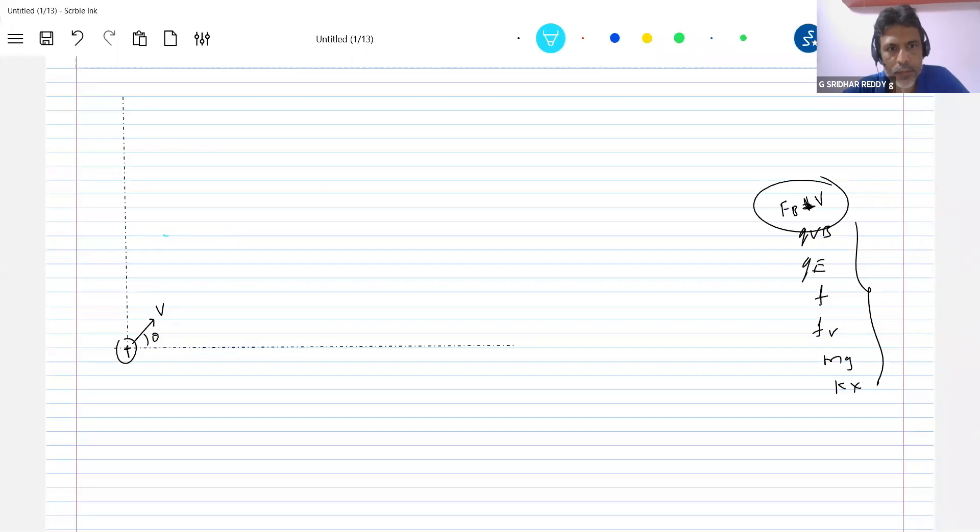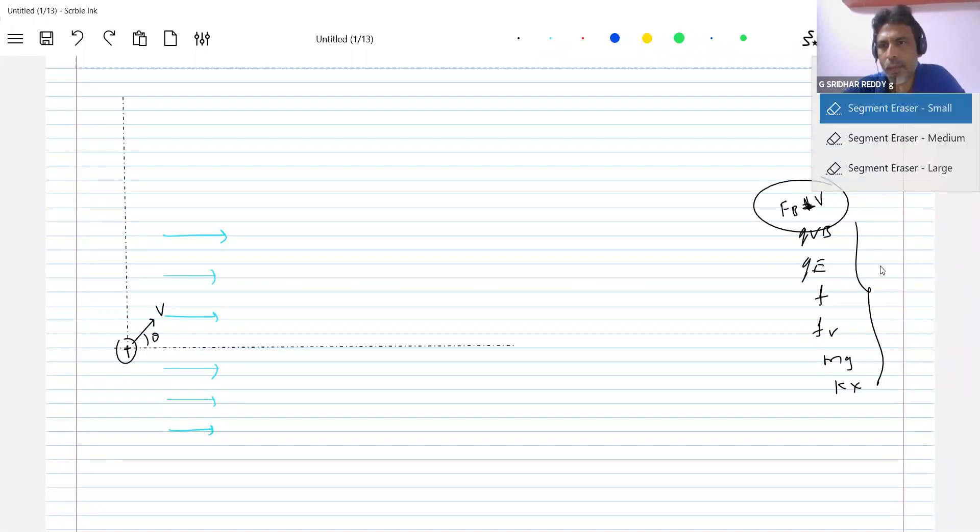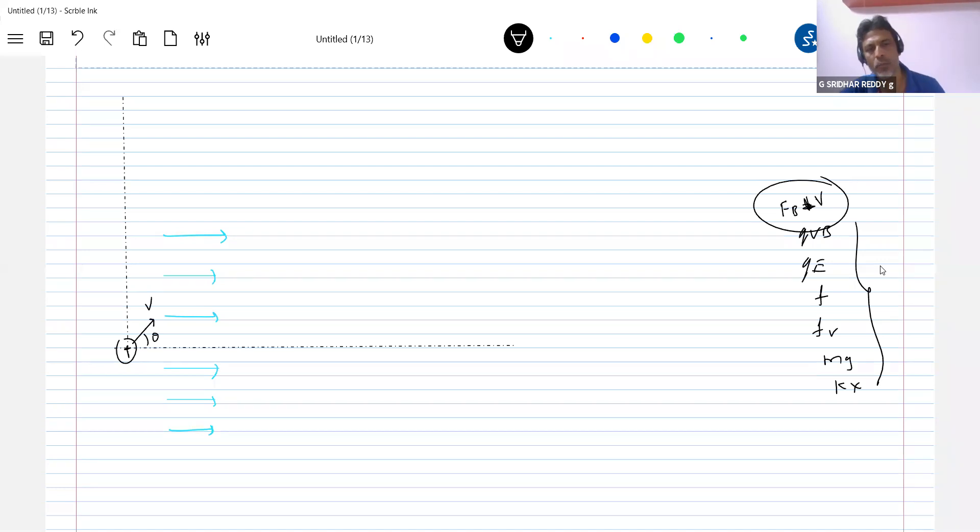There's a uniform magnetic field directed along the x-axis here. I'm going to project a charged particle. So we'll resolve this into two parts: V cos theta and V sin theta.